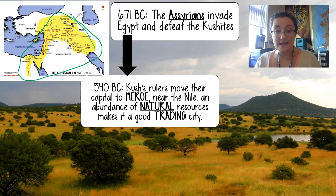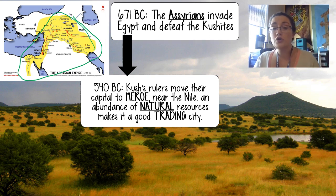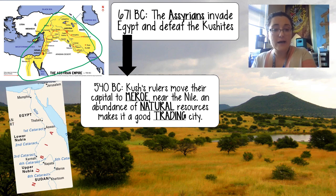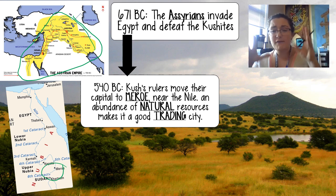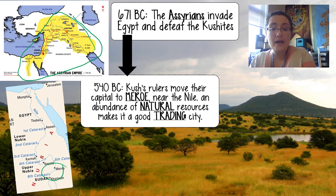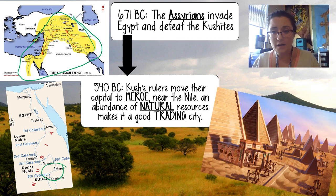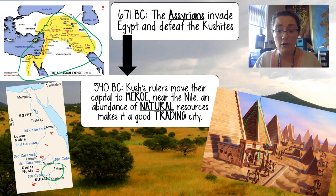By 540 BC, Cush's rulers decided to pull back a little bit — they didn't want to be part of the Assyrian Empire anymore. So they moved their capital to Meroe, a city back down in the south near the Nile, separating themselves from Egypt. They had an abundance of natural resources there, right along the Nile, making it a good trading city. We see again those pyramids, and for a while Cush became powerful again.